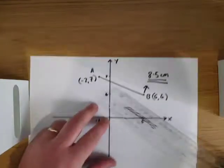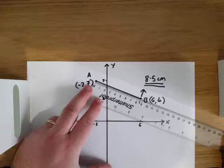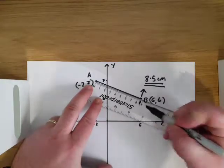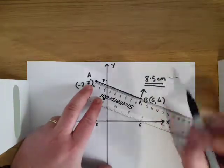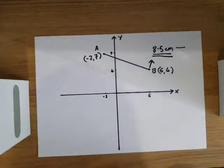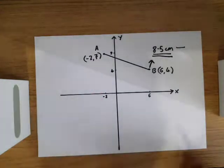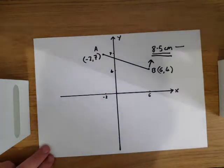if we were to measure from here to here, we have 8.5, which is correct. So there are two methods of finding the distance between two points. I hope you've enjoyed the video.